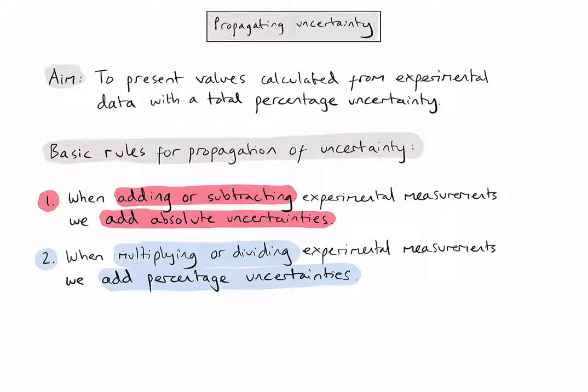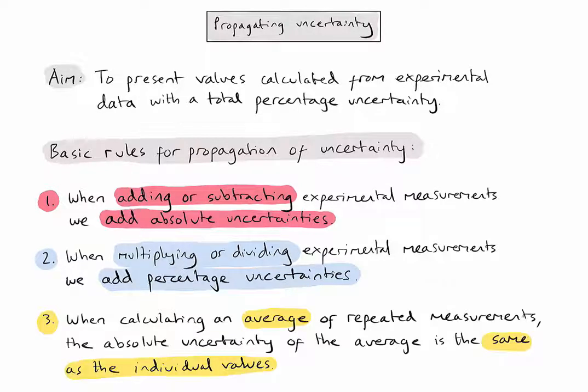The third and final rule: if we are calculating an average of repeated experimental measurements, we actually don't need to do anything with the uncertainty. More specifically, the absolute uncertainty of the average is identical to the absolute uncertainties for the individual values. If you're not sure about the different types of uncertainties mentioned, it's worth checking out the types of uncertainty video before watching the rest of this.